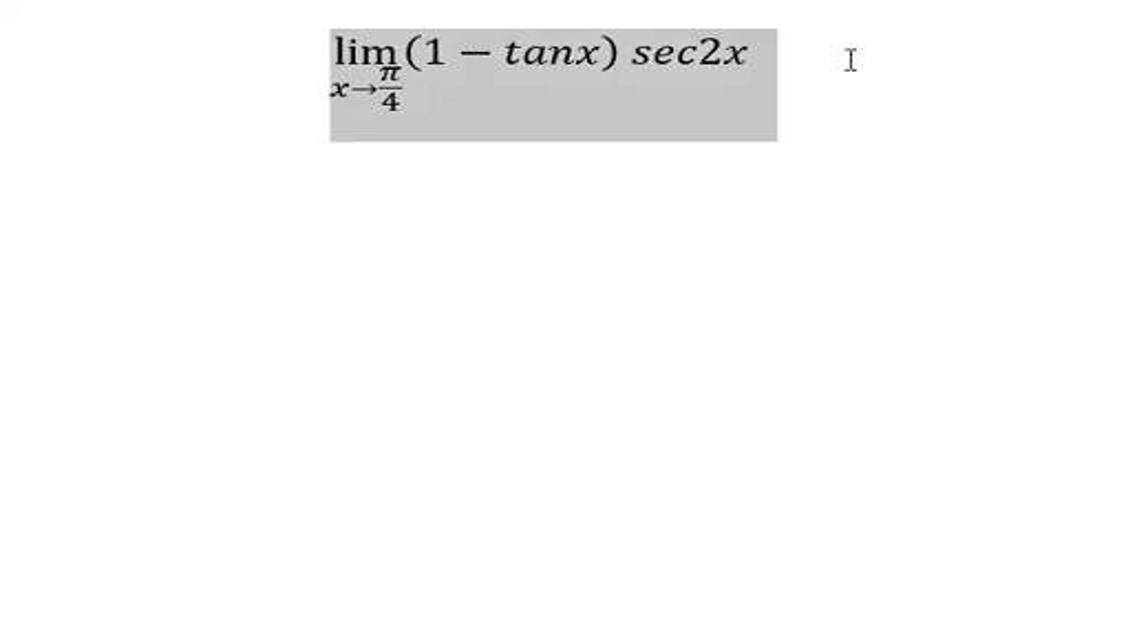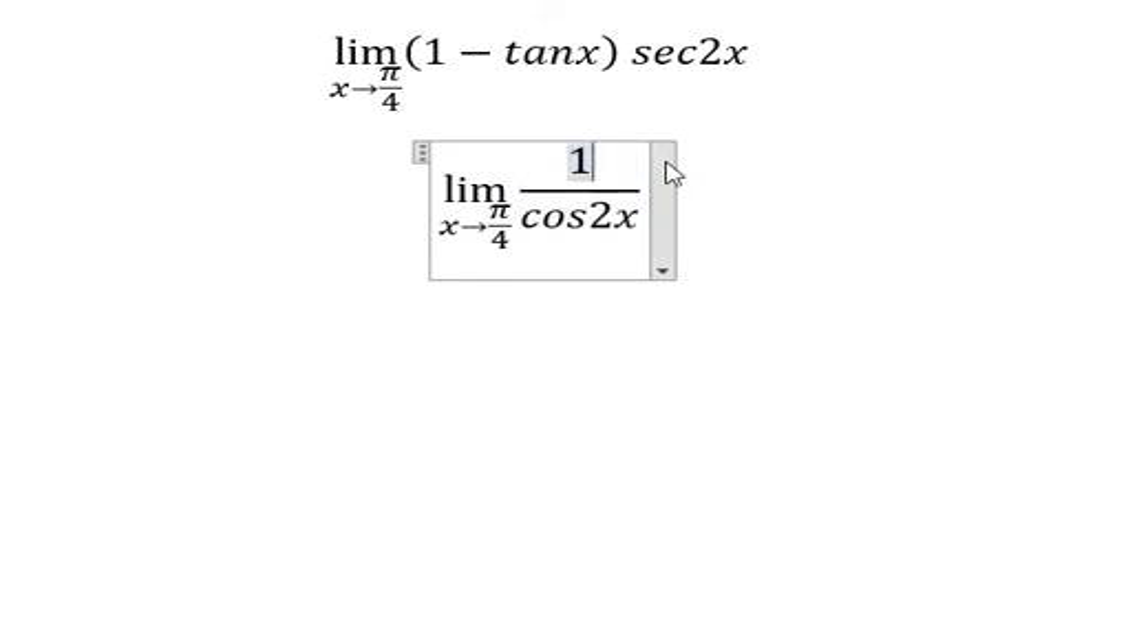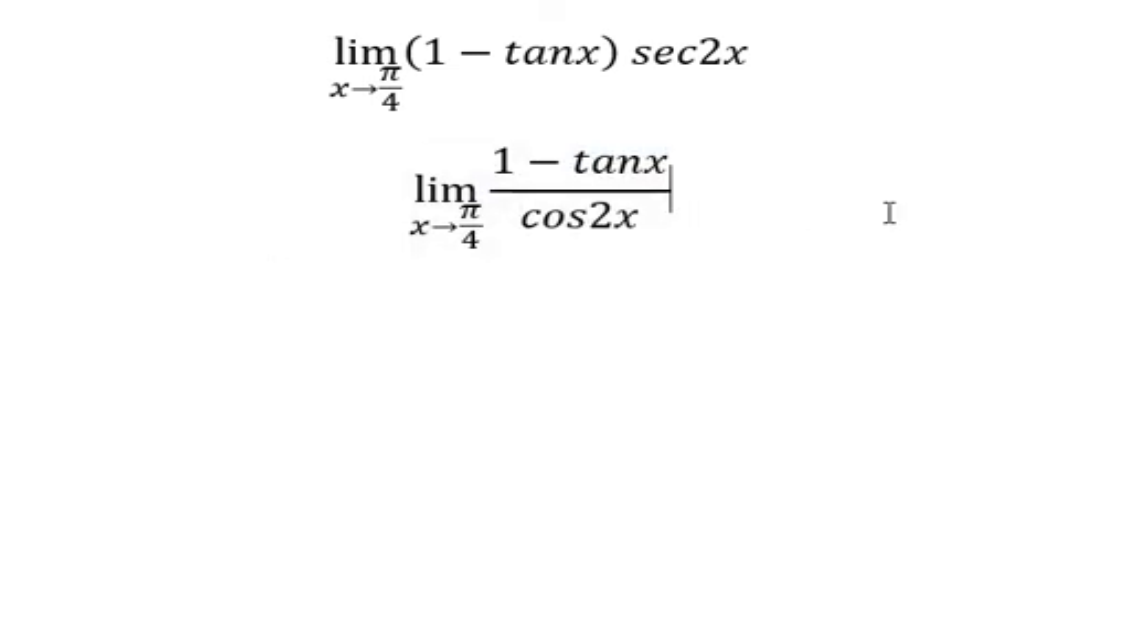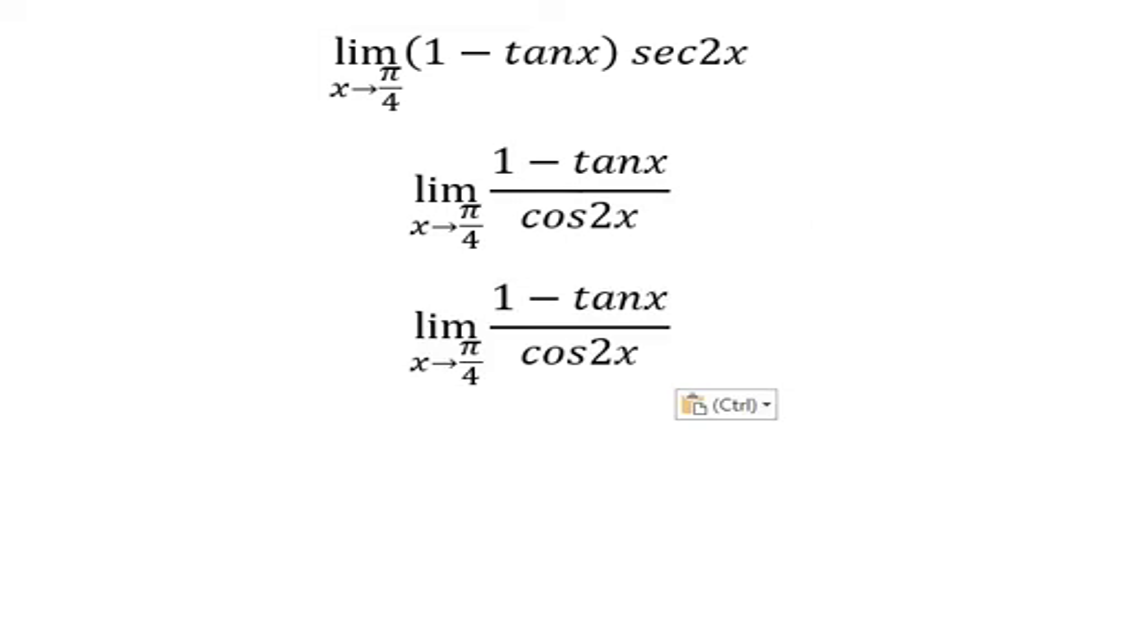For sec(2x), we have 1 over cos(2x). I will put this one here. Next, for tan(x), we change it to sin(x) over cos(x).